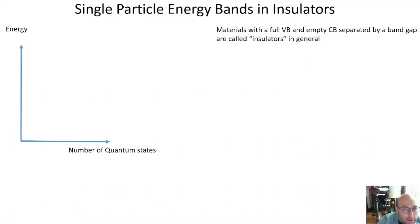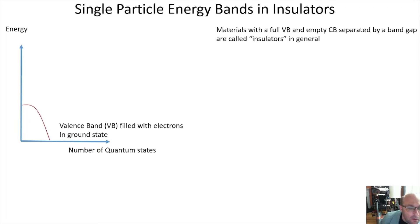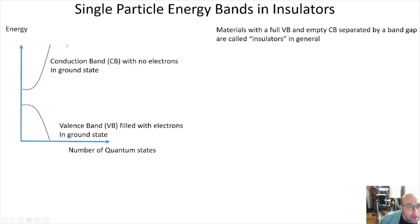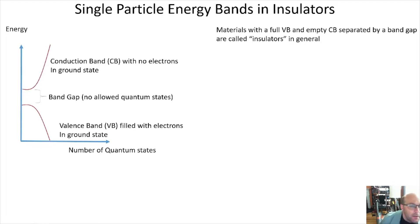Let's start by talking about single-particle energy bands in insulators at zero Kelvin. All semiconductors are insulators. We start with a full valence band of electrons, drawn on axes where the vertical axis is energy and the horizontal axis counts the number of quantum states — so this is a density-of-states picture. In addition, you have an empty conduction band, and the meaning of an insulator is that the full valence band is separated from the empty conduction band by a region of energy with no allowed quantum states at all. That's called the band gap.